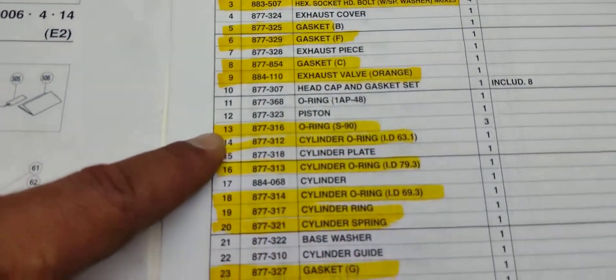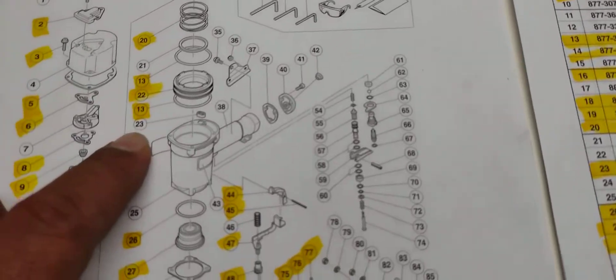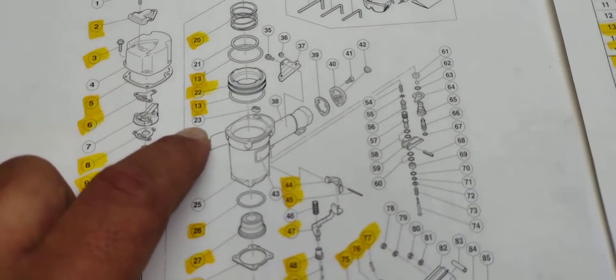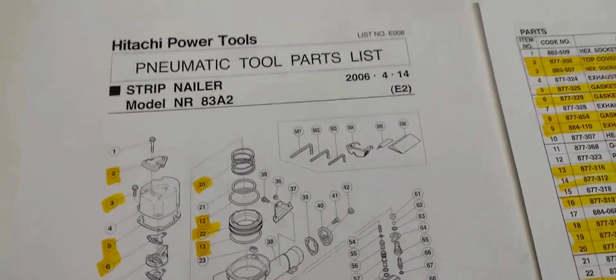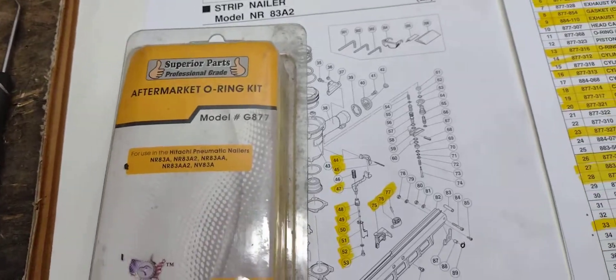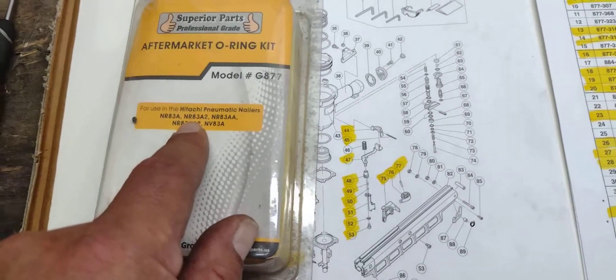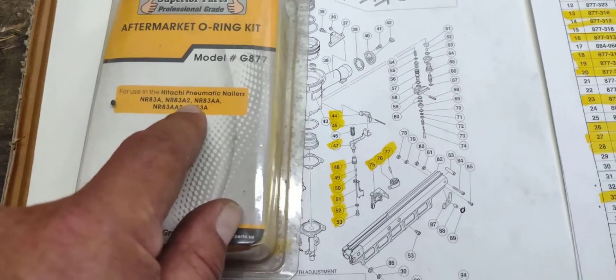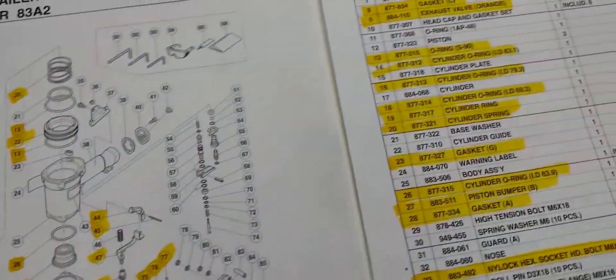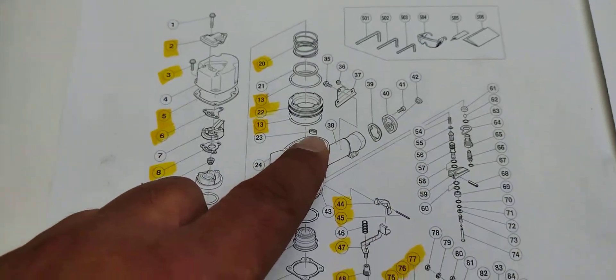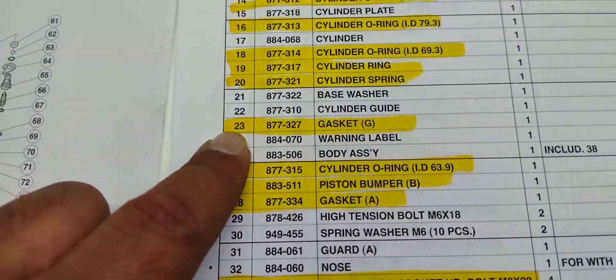When I look for number 20, there it is, the cylinder spring. The part that I'm gonna suggest comes with a kit that I'm gonna show you guys right now, which is this one right here. This is the aftermarket orange kit. This covers the NR 83A, NR 83A2, A3, double A, and a couple other ones. It comes with this little part, with this kit.